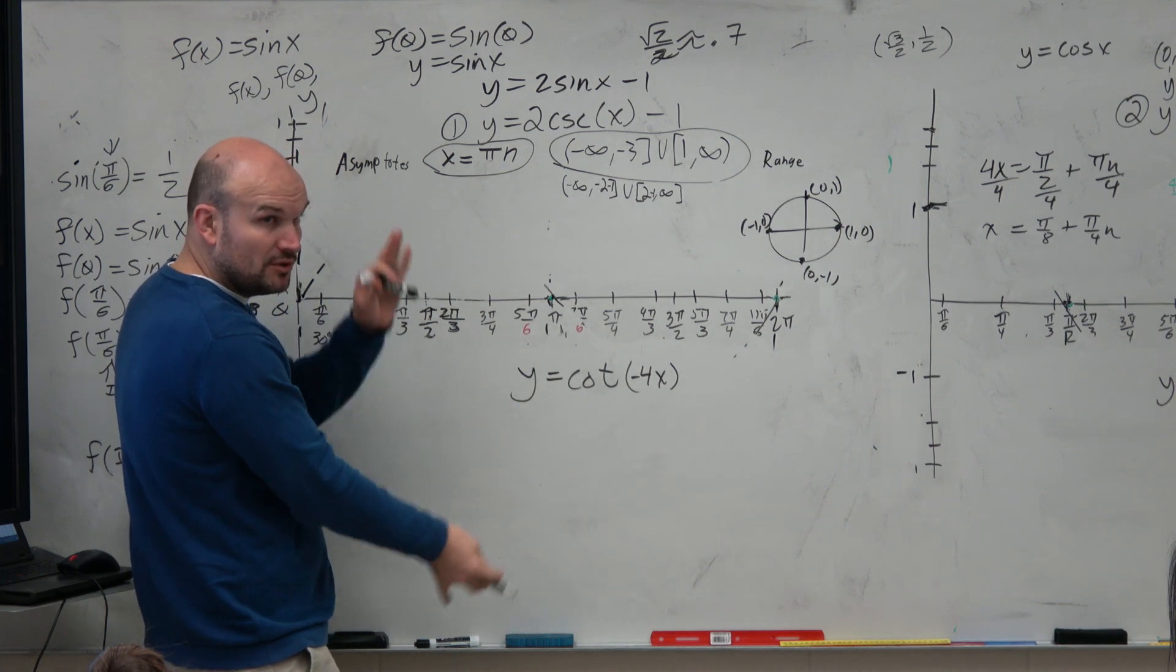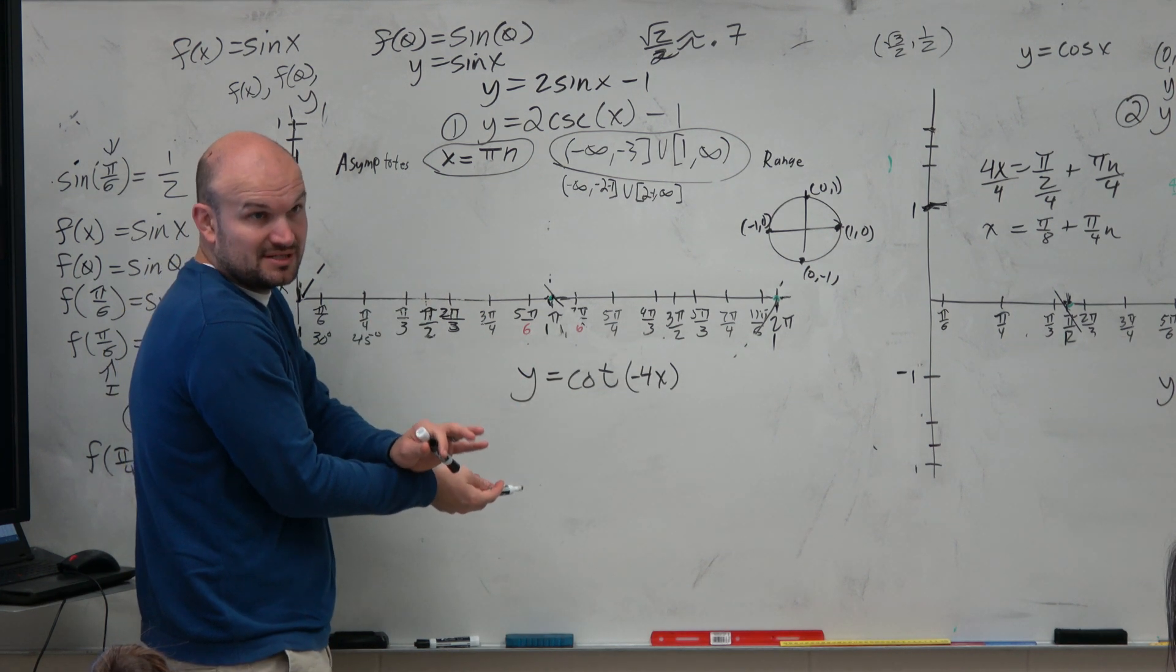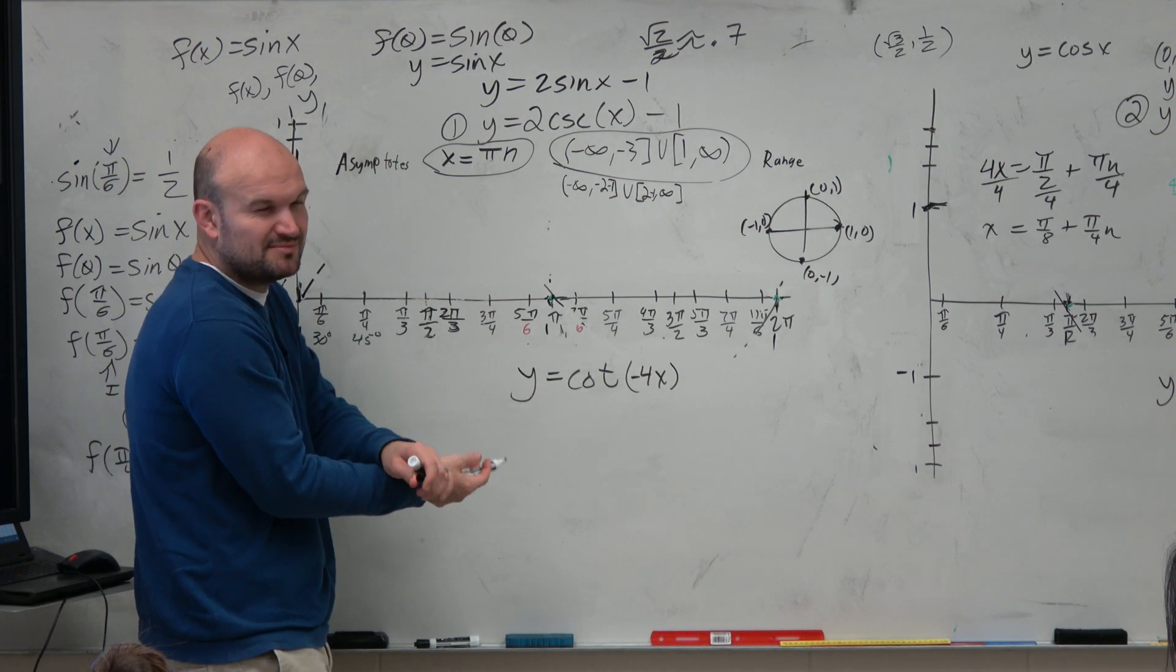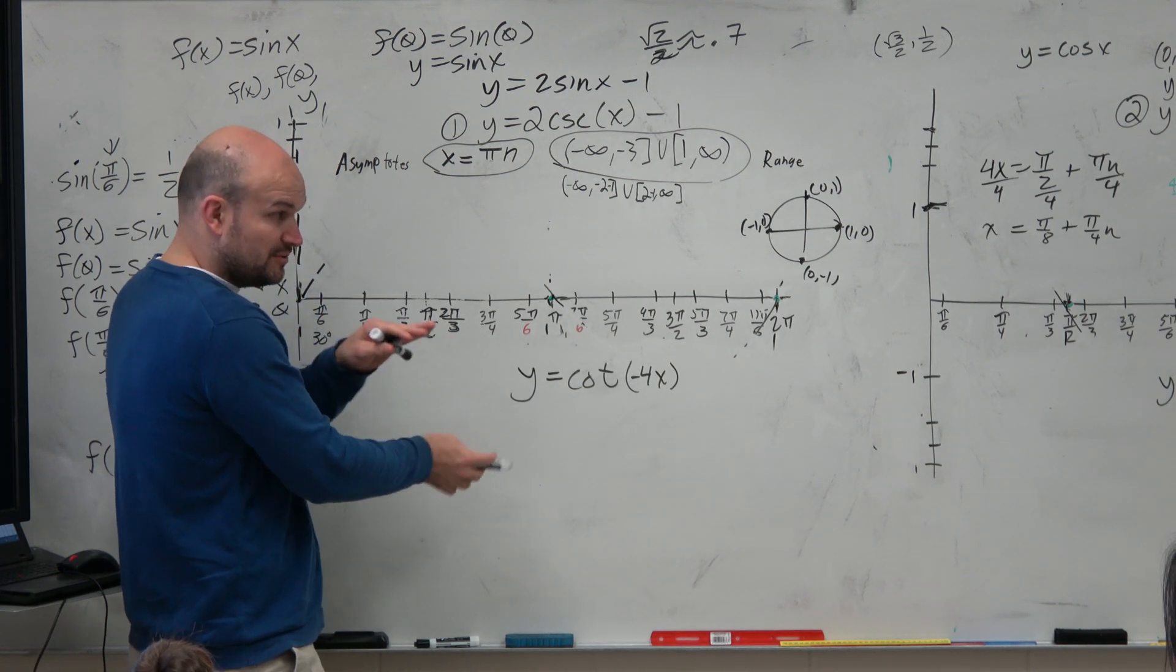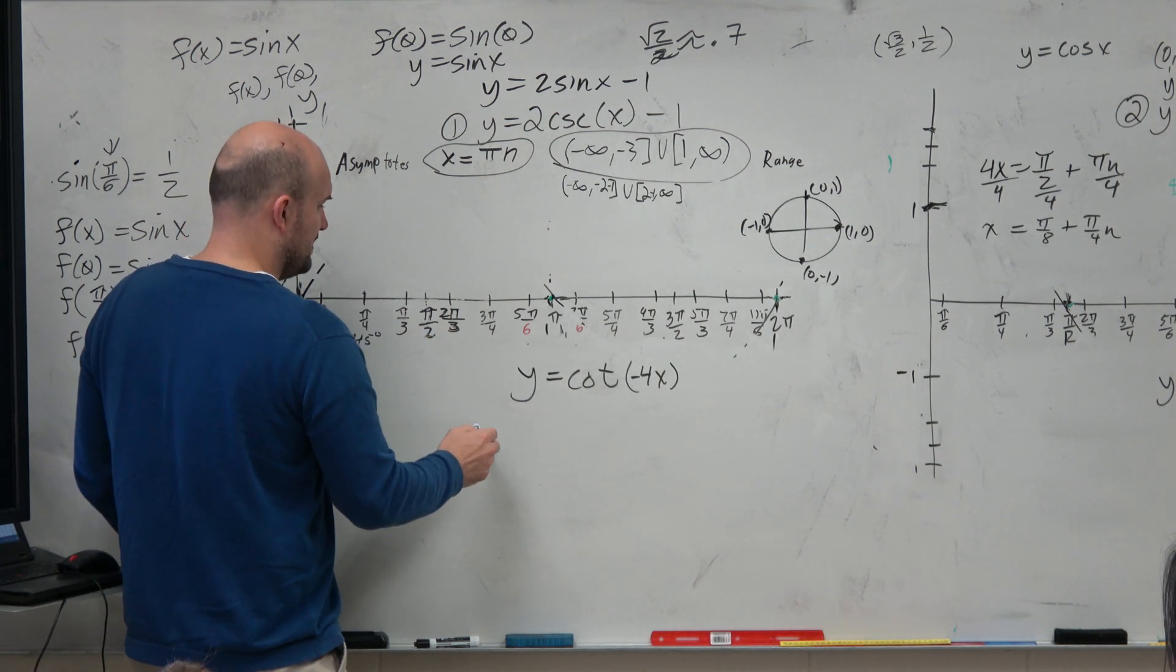So obviously there's no amplitude, right? So we want to make sure we don't write amplitude, because there's no amplitude for cotangent.